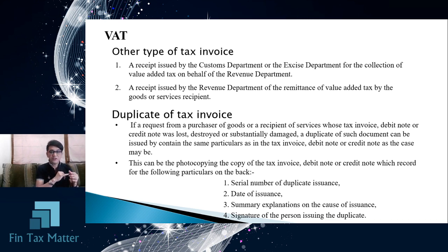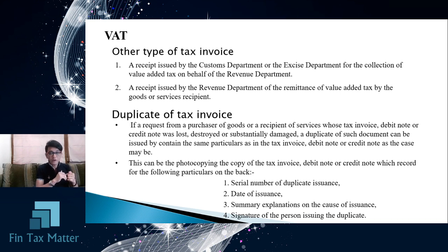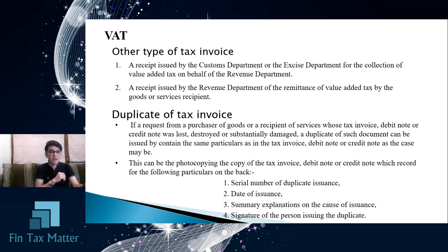The duplicate tax invoice must show: the serial number of the duplicate tax invoice, the date of issuance, a summary explanation of the reason why the VAT registrant must issue the duplicate tax invoice, and the signature of the authorized person signing to issue the tax invoice. These are the requirements for preparing a duplicate tax invoice.